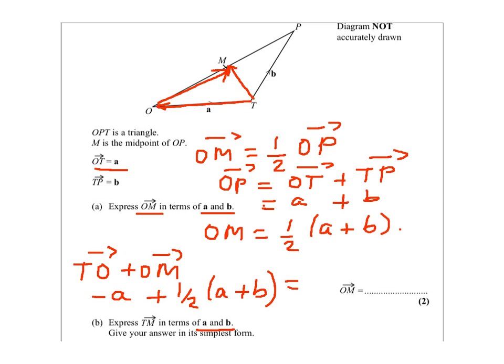Now, rearranging this, I got half of a minus a plus half of b. This will give me TM equals minus half of a plus half of b.